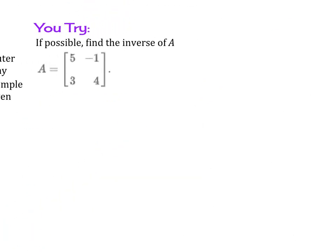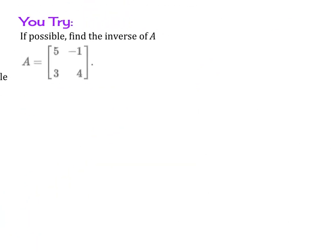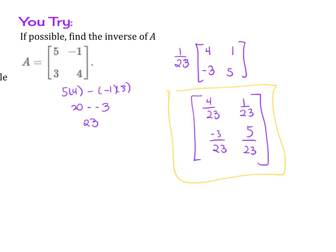Try out this example here. If possible, find the inverse of A. If you try this out, you should have gotten the determinant is 23. Then you switch the places of the a and d. So this is 4, this is 5. You write the same numbers here but just switch the signs. Then you distribute the 1 over 23, and you find you get 4 over 23, 1 over 23, negative 3 over 23, and 5 over 23.